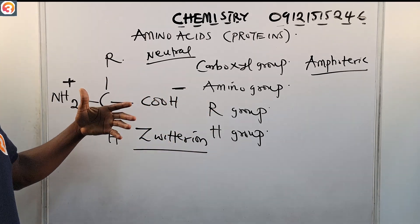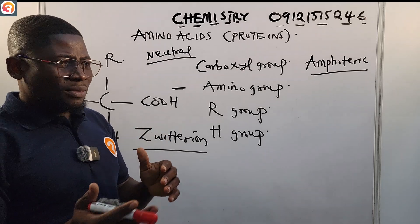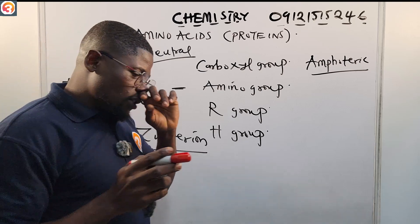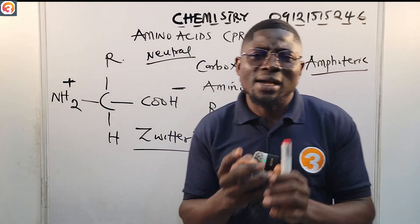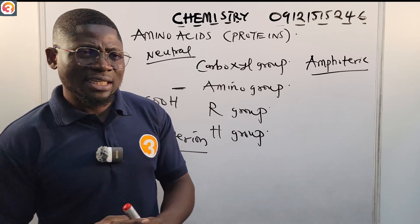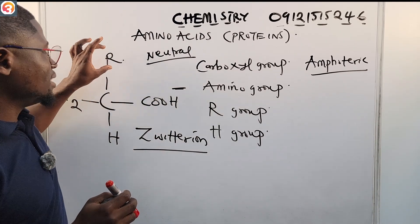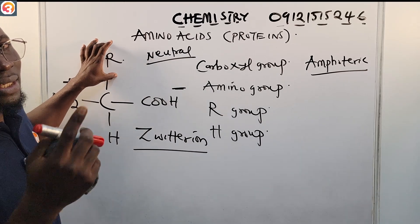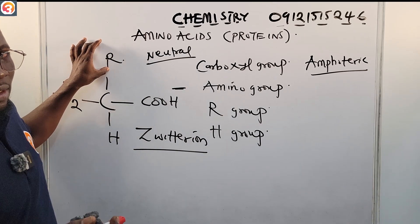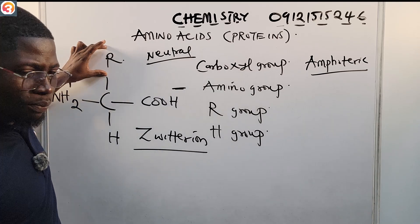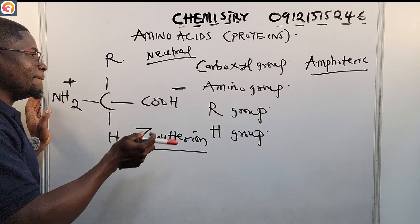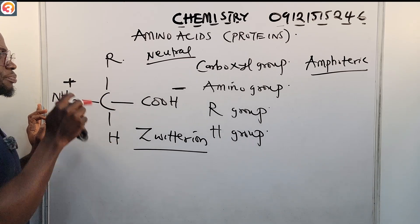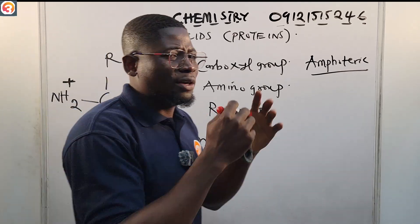What makes one amino acid different from another depends largely on the R group. The R group will largely determine which amino acid you are dealing with. Different R groups give different types of amino acids.